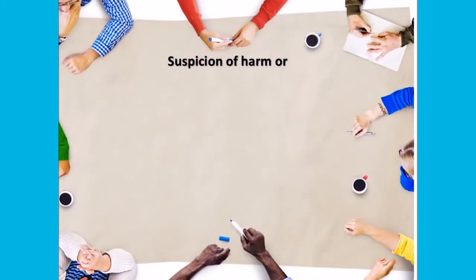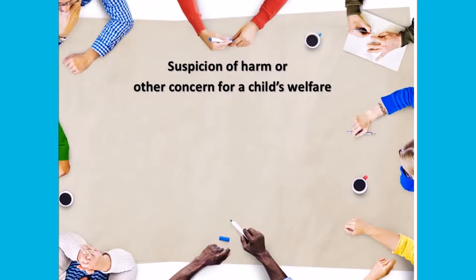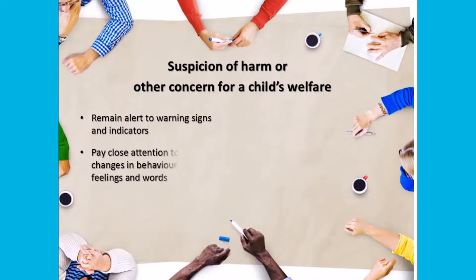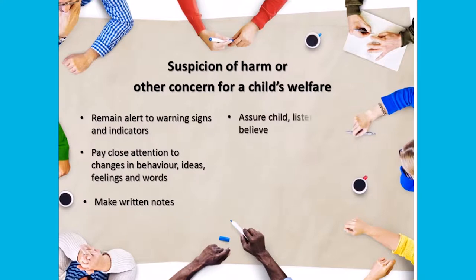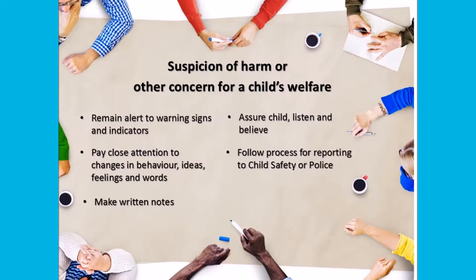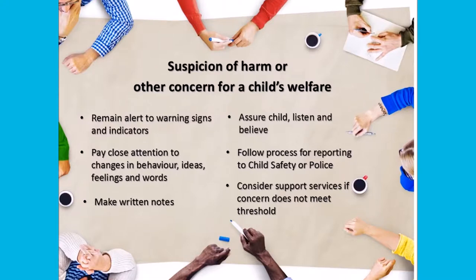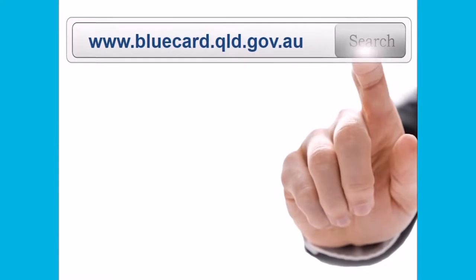When managing a suspicion of harm or other concern for a child's welfare, you may advise your staff and volunteers that they should remain alert to any warning signs or indicators, pay close attention to changes in the child's behaviour, ideas, feelings and the words they use, and make written notes of observations. Assure a child that they can come to talk whenever they need to and listen to them and believe them when they do. Follow any relevant process for reporting a suspicion of harm to child safety or the police, or consider what support services could be offered to the family if the concern does not meet the relevant threshold to make a report. The toolkit available on the Blue Card Services website provides further detailed information in relation to how to manage a disclosure or suspicion of harm.